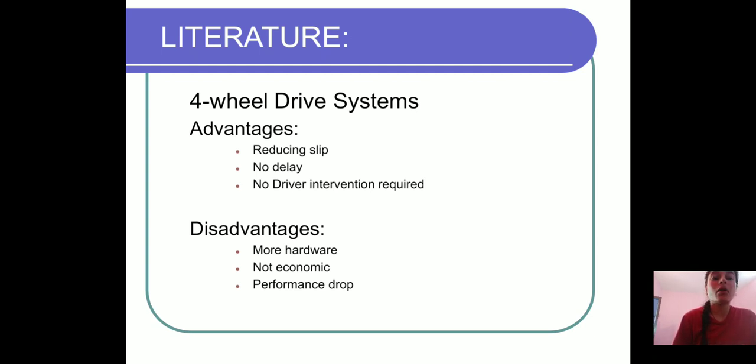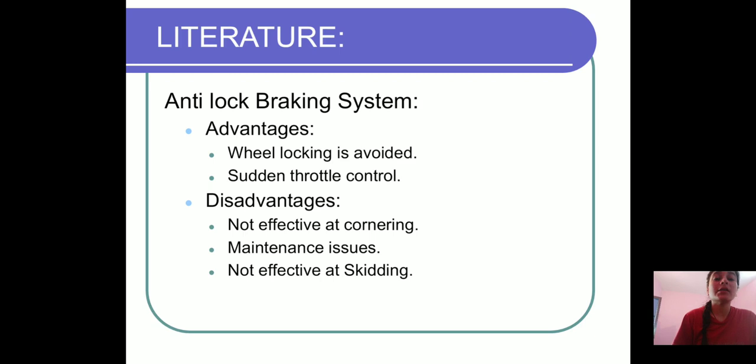Performance drops in four-wheel drive system. The advantages of anti-lock braking system are: wheel locking is avoided and sudden throttle control is avoided. The disadvantages are: not effective concerning maintenance issues and not effective at preventing skidding.